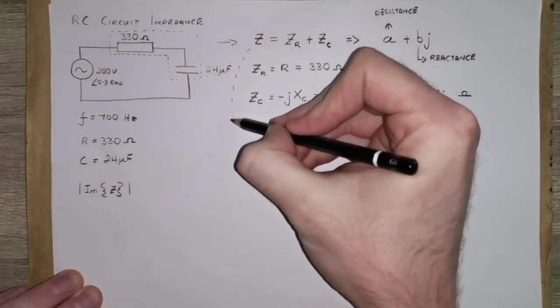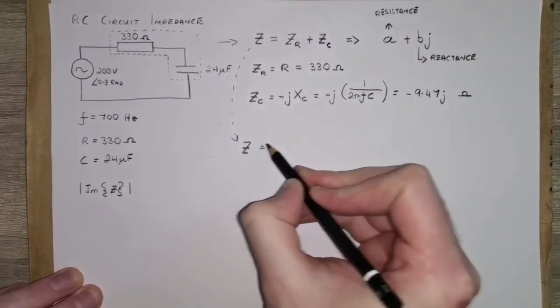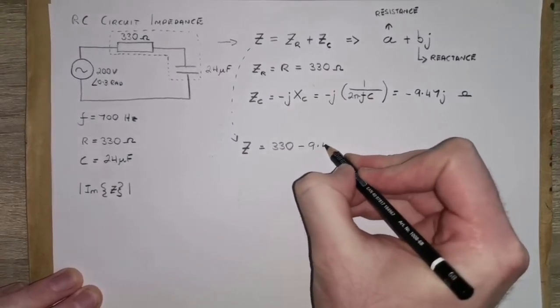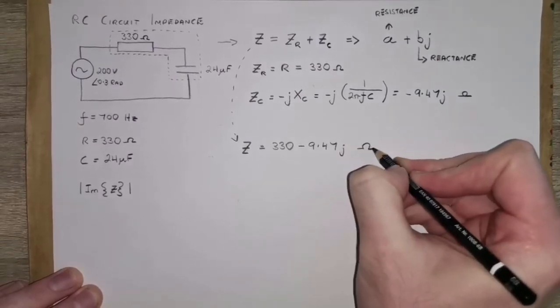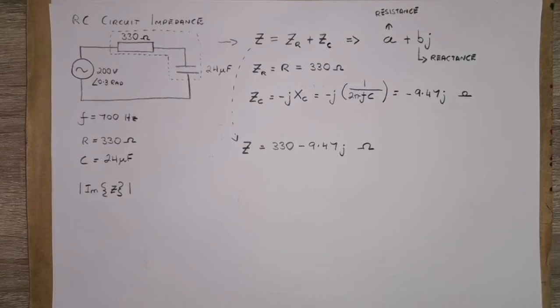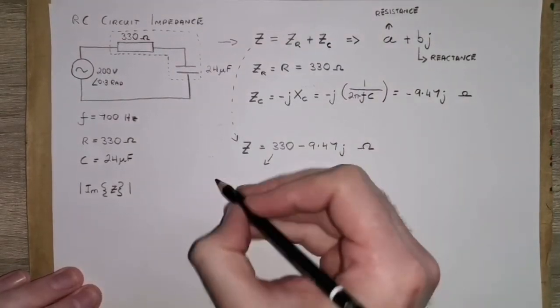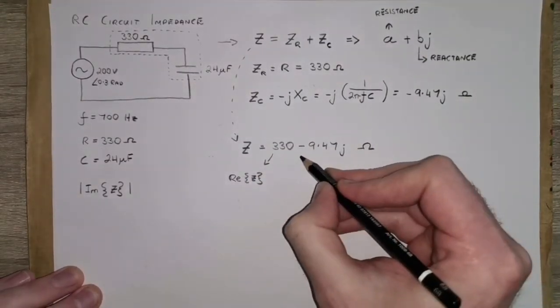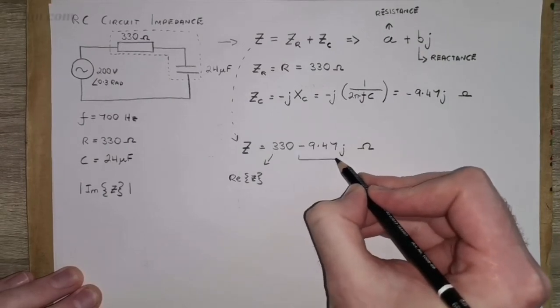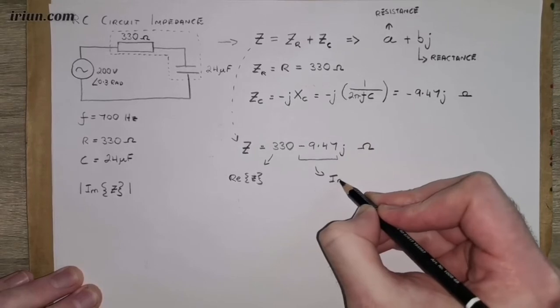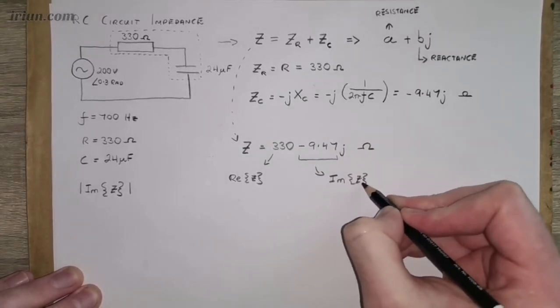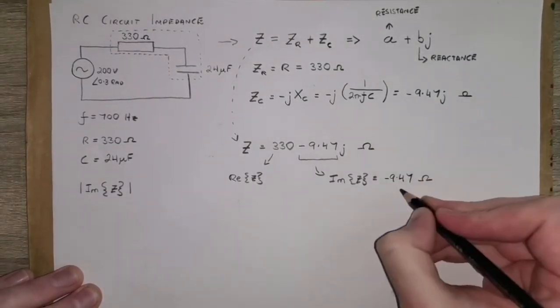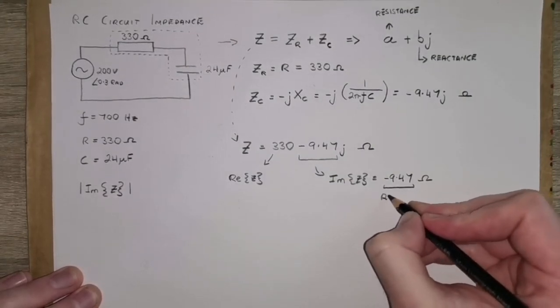Now, if we take that down here, our impedance, the total impedance is 330 minus 9.47 J ohms. Where this is the real part of Z, and this part here is the imaginary part of Z, which is minus 9.47 ohms. And this is what the question is looking for. This is the magnitude of the reactance. Well, sorry, that is its reactance, but the magnitude then would just be 9.47.